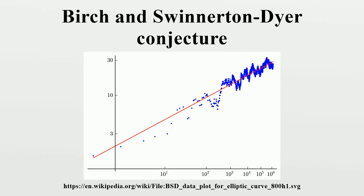In mathematics, the Birch and Swinnerton-Dyer conjecture is an open problem in the field of number theory. It is widely recognized as one of the most challenging mathematical problems. The conjecture was chosen as one of the seven Millennium Prize problems, listed by the Clay Mathematics Institute, which has offered a $1 million prize for the first correct proof.